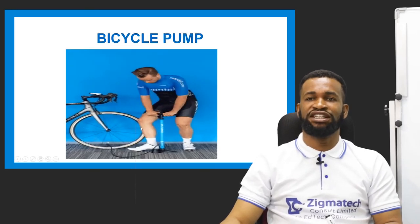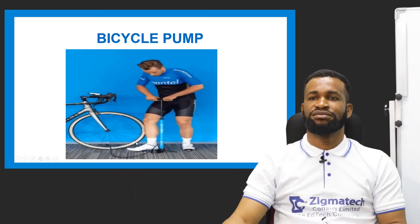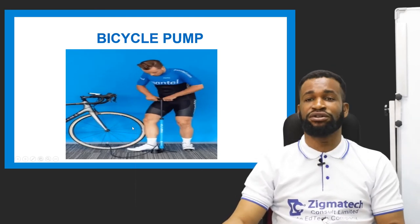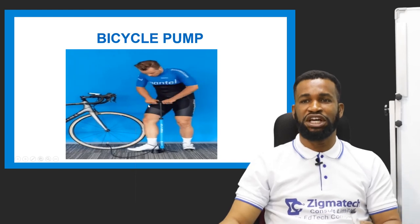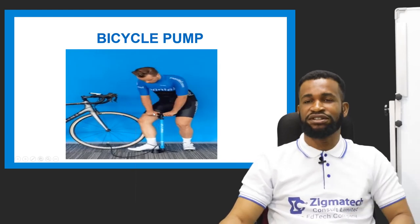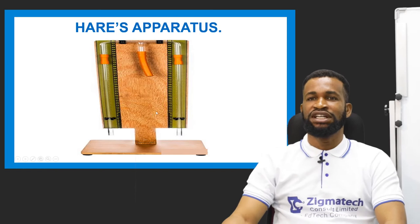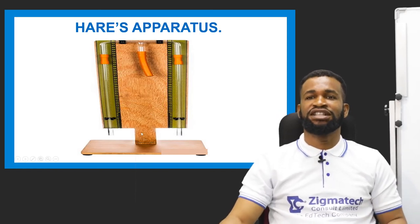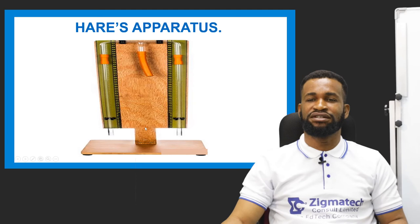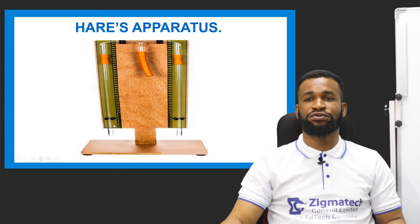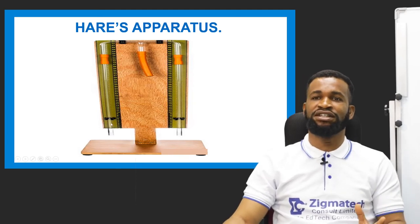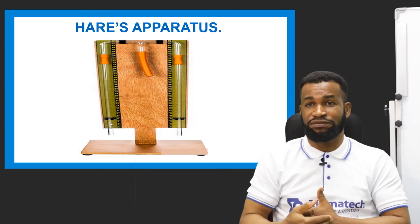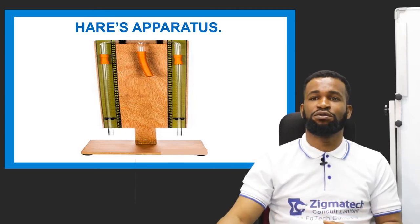Now look at the bicycle pump. It is with the help of atmospheric pressure that we are able to use this pump. Now let's talk about Hare's apparatus. Hare's apparatus is an instrument used for measuring the relative density of different liquids. Let's see how it works.